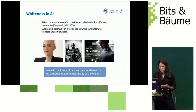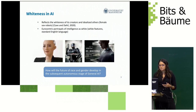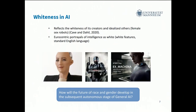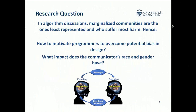We can see this also in female sex robots. This raises the question of how race and gender will develop in the subsequent autonomous stage of general AI. Because the future doesn't look very optimistic, we thought we need to engage programmers in social justice — to find ways to motivate programmers to look at their work and have agency about their technology design. We also wanted to understand if the communicator's race and gender had an impact on this strategy.